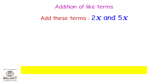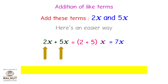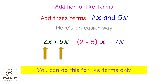2x is equal to x + x, and 5x is equal to x + x + x + x + x. So 2x + 5x = 7x. Another way: as the variable part is the same in both terms, we just add the coefficients. Coefficient of 2x is 2, and coefficient of 5x is 5, so 2x + 5x = 2 + 5 = 7x. You can do this for like terms only.